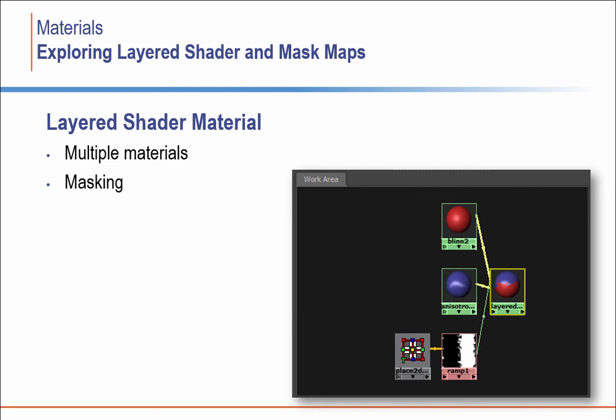For example, to create a rusty pipe, you can have one material be the steel pipe material and the second could be the rusty pipe material. By creating a specialized texture map to blend the two, you can create a very realistic rusted pipe effect.